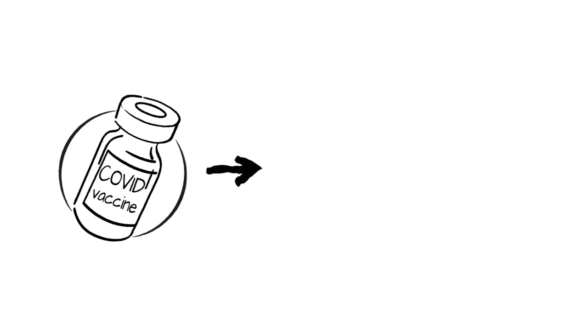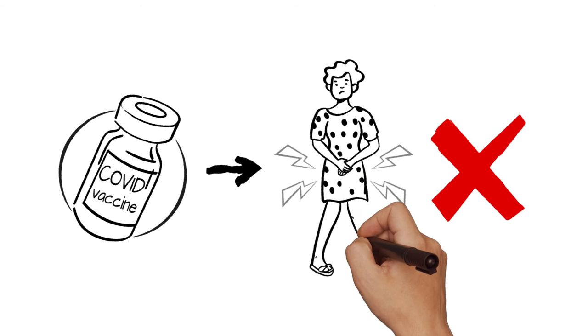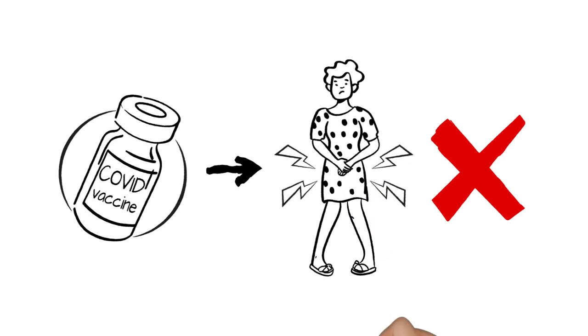Sixth, the COVID-19 vaccine does not affect fertility. Anecdotal evidence suggests the vaccine could temporarily affect menstruation, but the effects are short-lived.